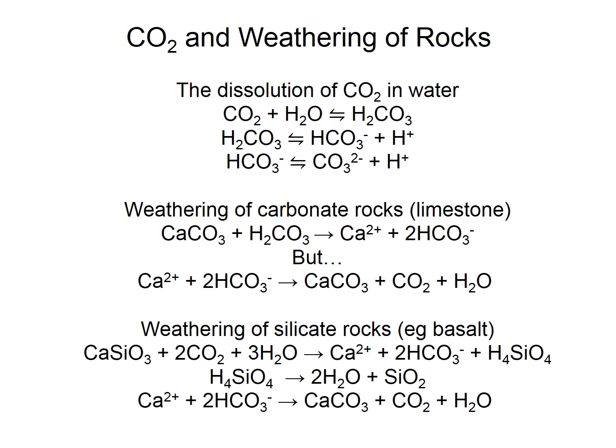This is one of the slides from the lecture, and it's a bit complex — lots of stuff on here. We're going to go through it bit by bit to explain what's going on in each of these series of chemical equations and chemical equilibria. We've got, first of all, what happens when carbon dioxide dissolves in water, and then basically two cases of weathering reactions: one of carbonate rocks and one of silicate rocks, which pretty much describes all of the weathering that happens on Earth.